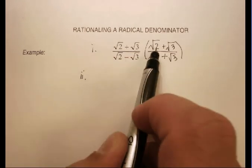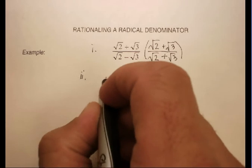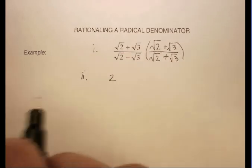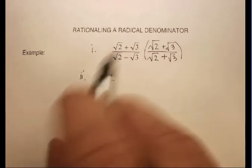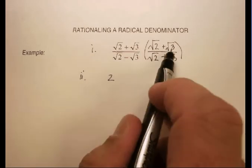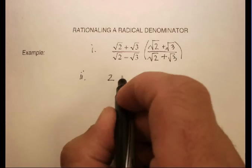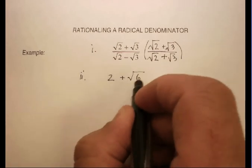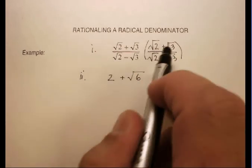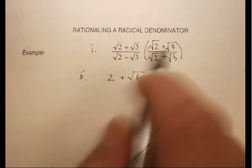Radical 2 times radical 2 is radical 4, or the square root of 4, or just 2. Radical 2 times radical 3 is plus radical 6. I can do that because the indexes or indices are the same. You can multiply what's underneath.